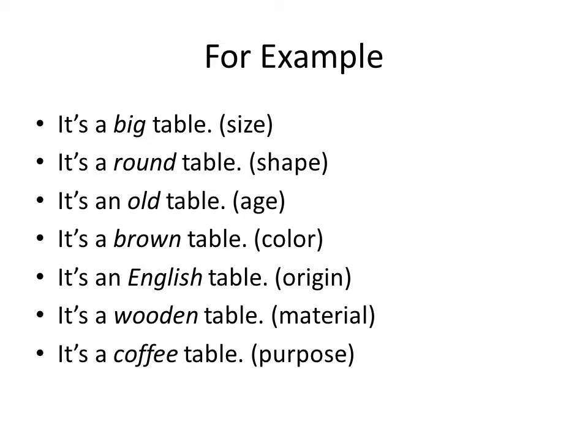It tells us that the table is big — it differentiates the kind of table, which is not small. Likewise, the word 'round' tells us that the table's shape is round. In the same way, different words explore the age, color, origin, material, and purpose of the object. All these words are known as adjectives.